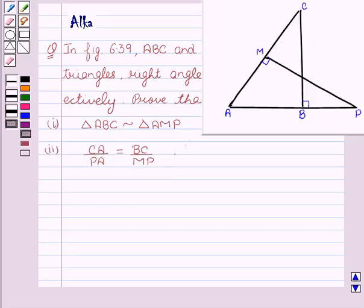Here is the given figure with ABC and AMP as two right angles, right angled at M and B. Now let's start with the solution.